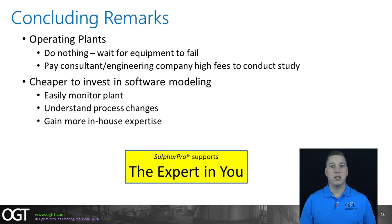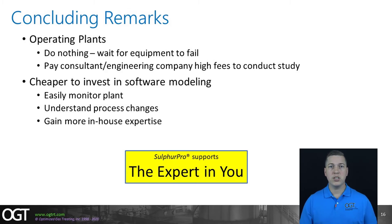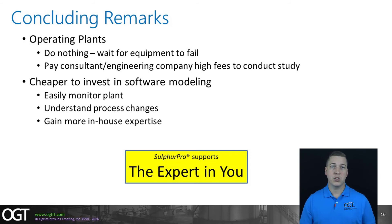There is a third and economical alternative: invest in good, reliable, and accurate modeling software such as SulphurPro. The model can then be set up for the plant not only to assess process changes but to monitor the plant on a weekly or even daily basis to help pinpoint problems before they cause an outage. This also helps gain more in-house expertise, helping plant engineers better understand how their plant is operating and what the limitations of that plant are. SulphurPro supports the expert in you.